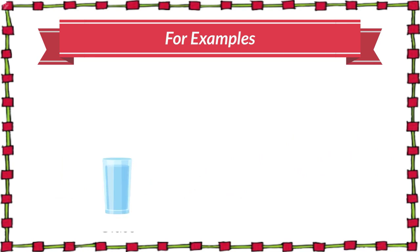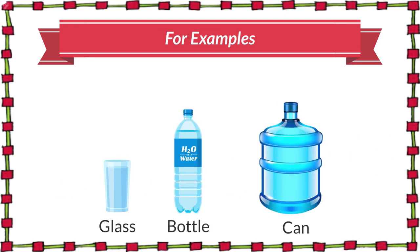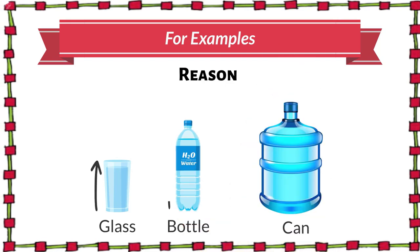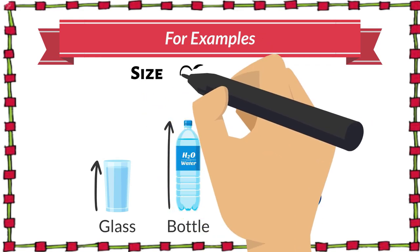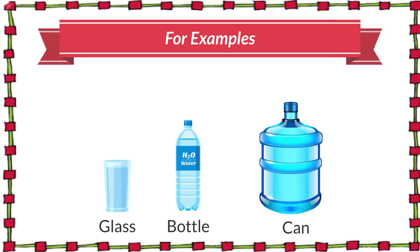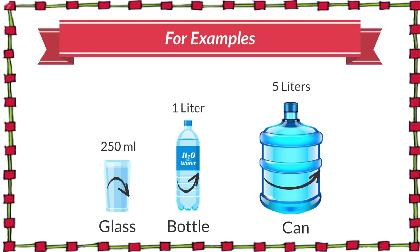For example, look at this glass, bottle, and can. Do you think they can contain the same amount of water? No, because they are of different sizes, and the bigger the size, the bigger the capacity. The glass can contain no more than 250 ml of water, the bottle can hold a maximum of 1 litre, and the can's maximum capacity is 5 litres. So as the size grew, the capacity grew too.